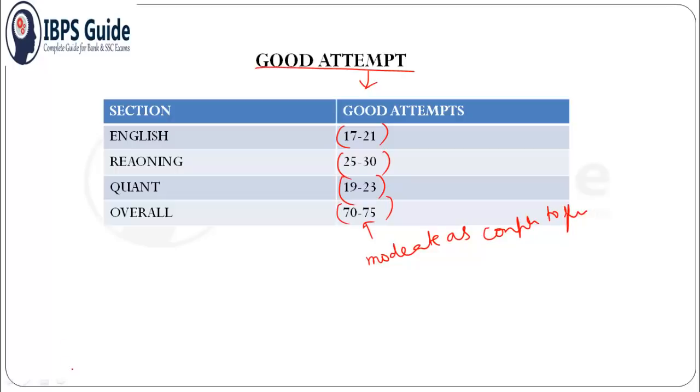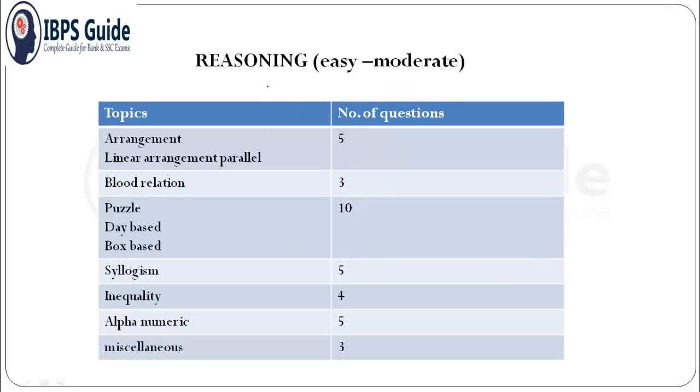Let's have a quick review of the topics asked in each section. For reasoning, reasoning was of easy to moderate level. One arrangement was asked - a linear arrangement parallel based, meaning two rows are given.